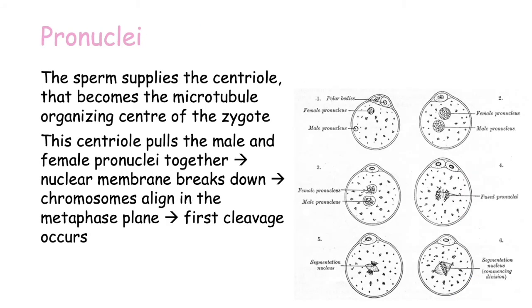When the sperm enters the egg it supplies the centriole, which becomes the microtubule organizing center of the zygote. The centriole pulls together the male and female pronuclei, and once these contact each other the nuclear membranes break down, the chromosomes align on the metaphase plate, and the first cleavage occurs. We can see this in the image: the egg has completed meiosis as shown by the presence of two polar bodies, then the pronuclei come together and we get the first cleavage.